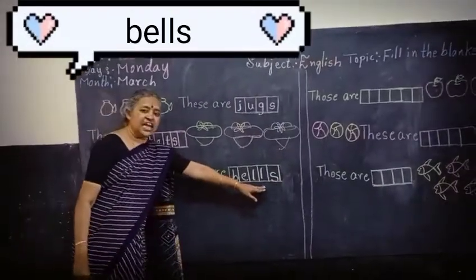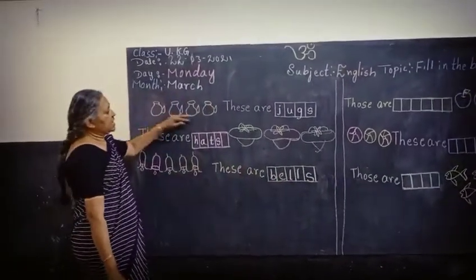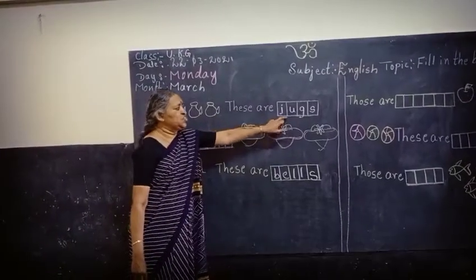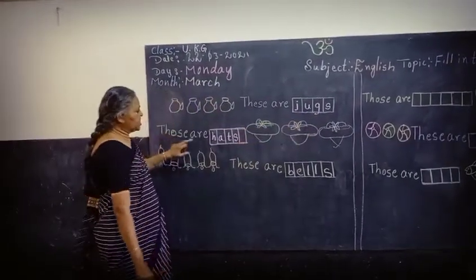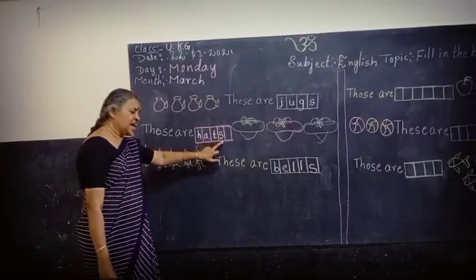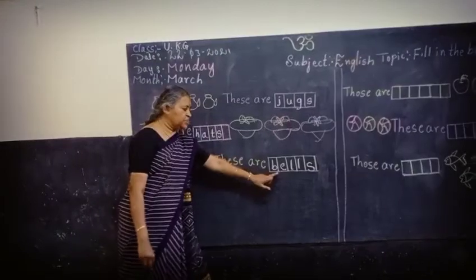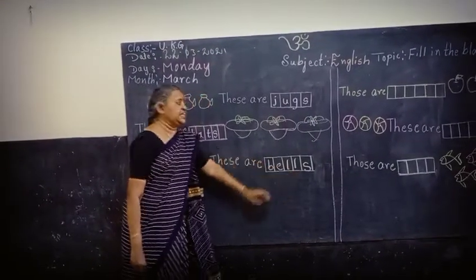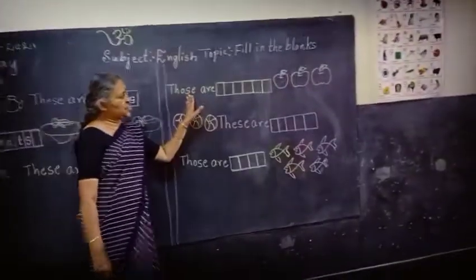You have to learn the spelling of Bells, children — B-E-L-L-S, Bells. These are Jugs — J-U-G-S. Those are Hats — H-A-T-S. These are Bells — B-E-L-L-S, Bells.